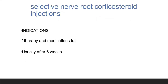The indication for selective nerve root corticosteroid injection — transforaminal steroid injection — is when, even after 6 weeks, the patient is still having pain. By injecting steroid into the site, the local inflammation is reduced. As steroid is an anti-inflammatory drug, it reduces inflammation at the site, relieving compression of the nerve root and reducing radiculopathy. Some patients improve immediately after the steroid injection.